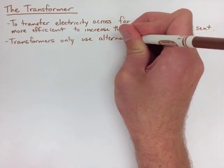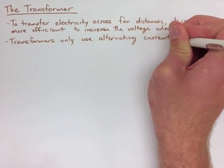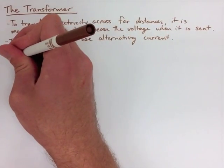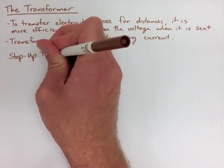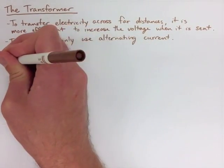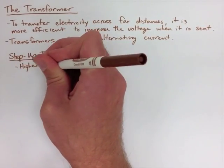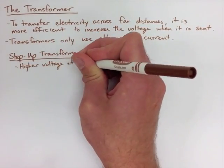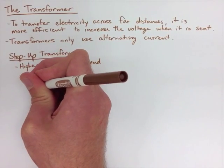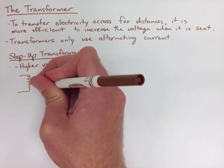So there's two types of transformers. A step-up transformer has higher voltage at the end. And the way this looks is a few coils at the start and then a whole lot of coils at the end. So we create a bunch of coils on one side of the transformer and not so many on the other.